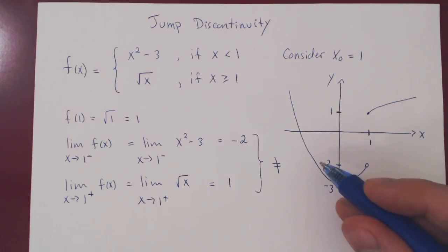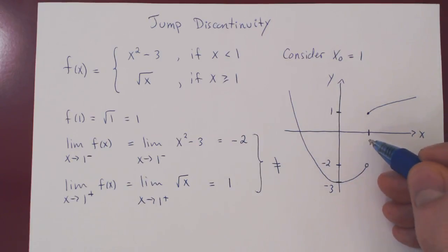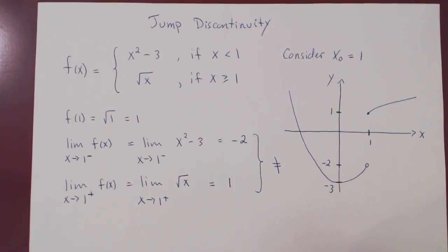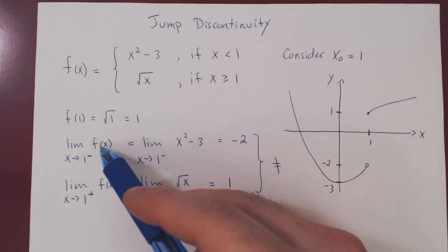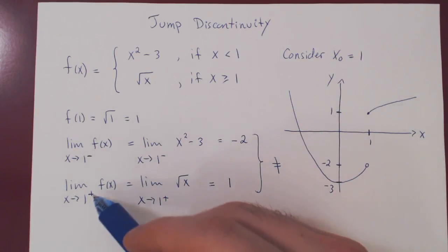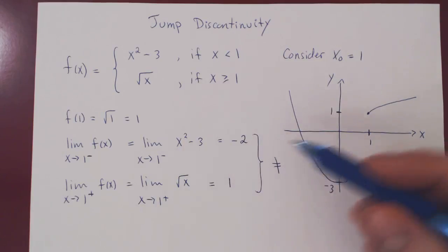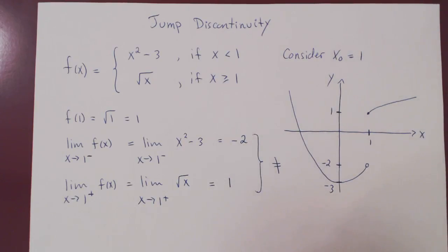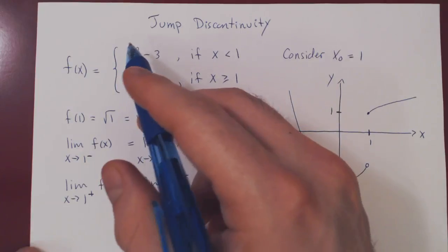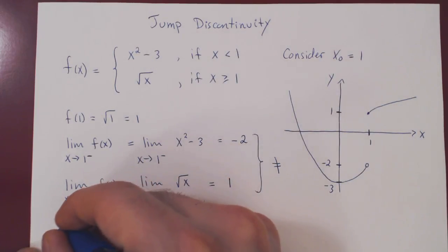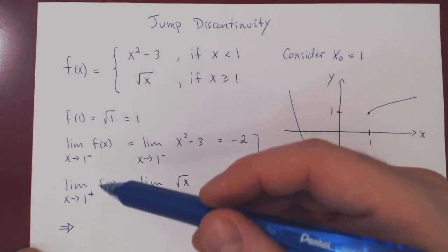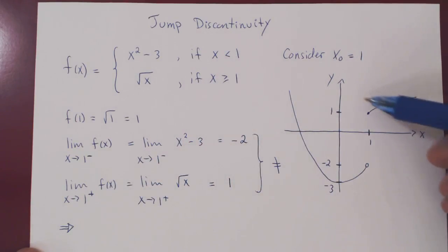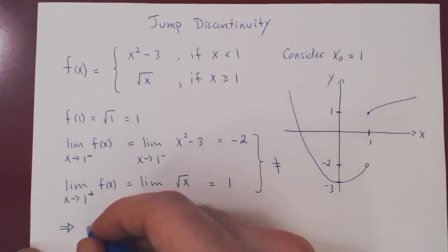The y values approach negative 2 but never reach it, because when x equals 1 the function equals 1. You can clearly see there is a jump in the function. When the limit from the left exists and the limit from the right exists but they are different, that's what happens — you get a jump in the function, and that's why we have a so-called jump discontinuity. Every time the two one-sided limits exist but are different, you will have a jump discontinuity.